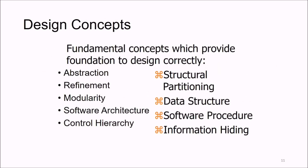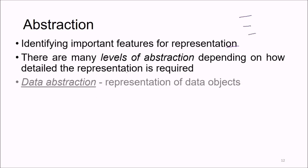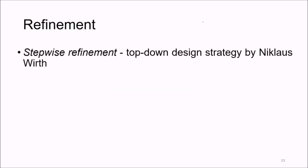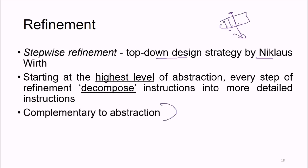Design concepts form the foundation for doing design correctly. These include abstraction, refinement, modularity, software architecture, control hierarchy, structural partitioning, data structures, software procedure, and information hiding. Abstraction involves identifying important features of the representation, with many possible levels depending on desired detail — data abstraction represents data objects, and procedural abstraction represents instructions. Refinement is stepwise top-down design, as given by Niklaus, where starting at the highest level of abstraction, each step decomposes instructions into more detailed instructions. This is complementary to abstraction.